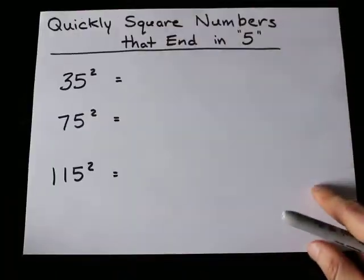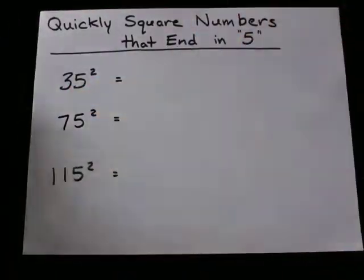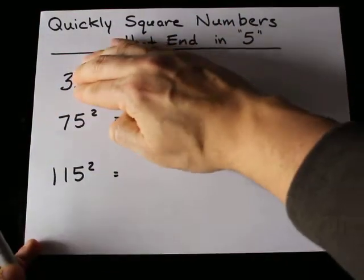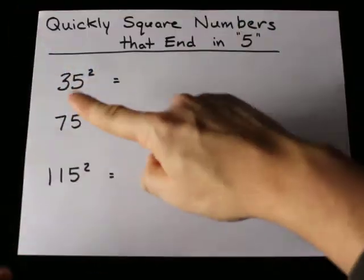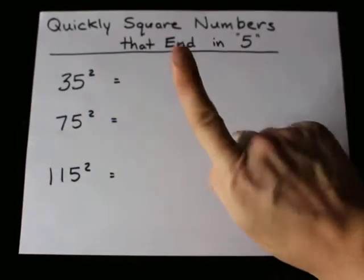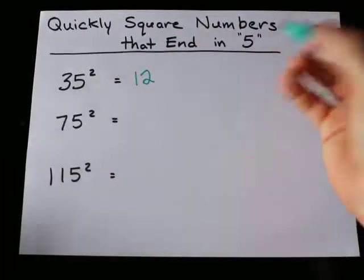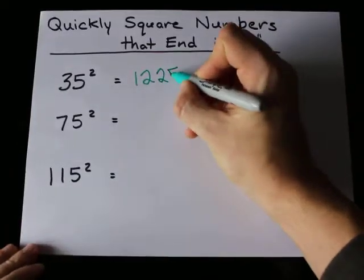Let's do that a couple times here. 35 squared, it's my favorite number to square by the way. We're going to chop off the 5, you're left with 3. 3 times 4, that's 1 more than 3, is 12.